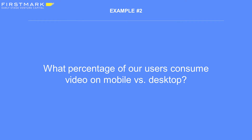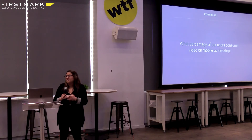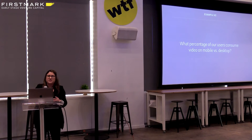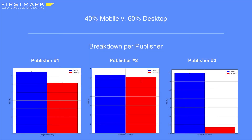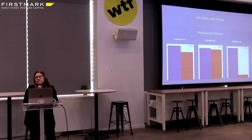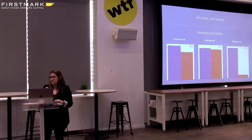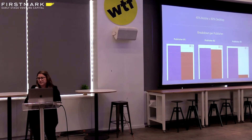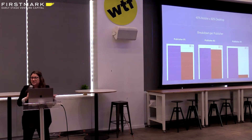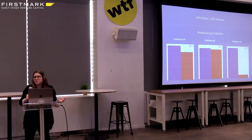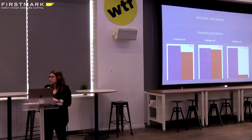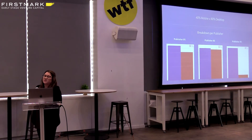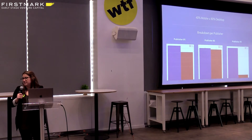Example number two: what percentage of our users consume video on mobile versus desktop? At a high level we see 40% on mobile versus 60% on desktop. But when you break that down by publisher, publishers one and two have a pretty similar split — about 50/50 or 40/60. Then you look at publisher three and it's skewed entirely towards mobile devices. That opens up a ton more questions: what opportunity does that create, what should we think about that publisher's video strategy? That's something we wouldn't know without the data.